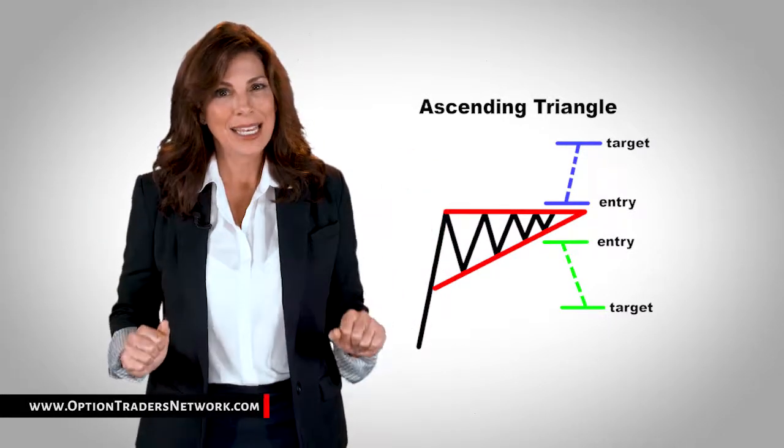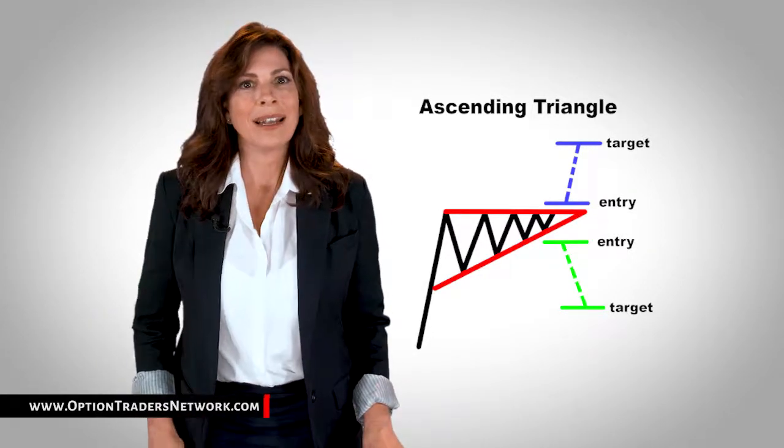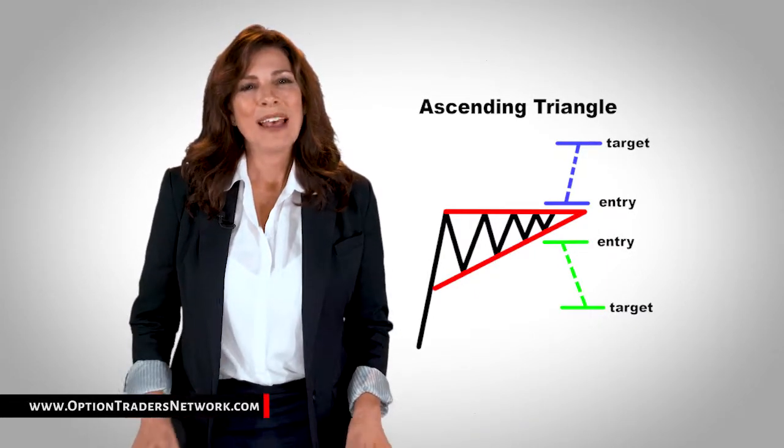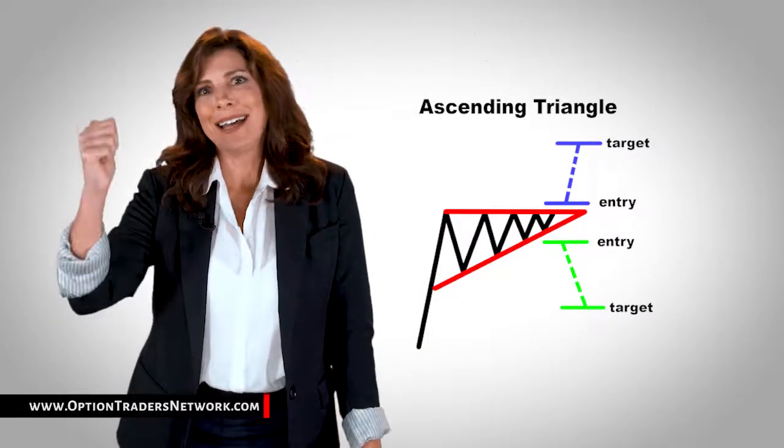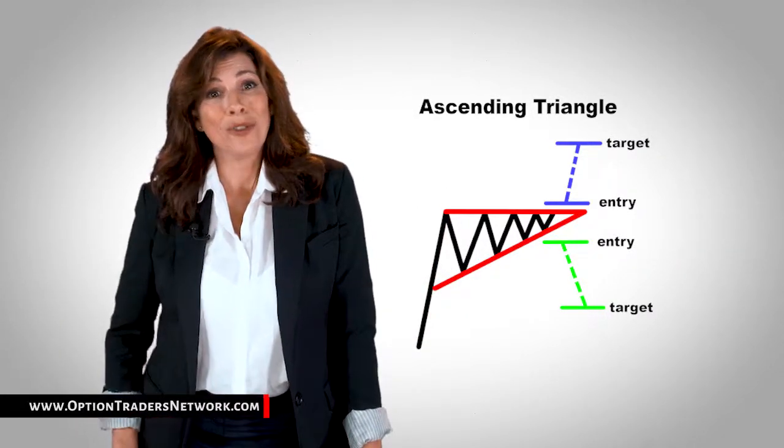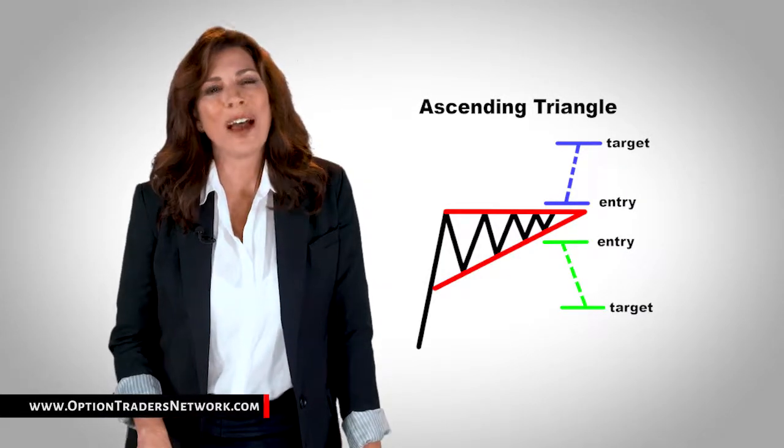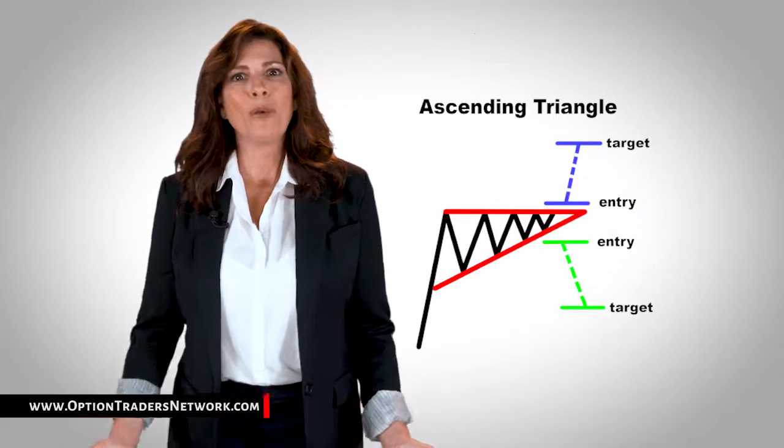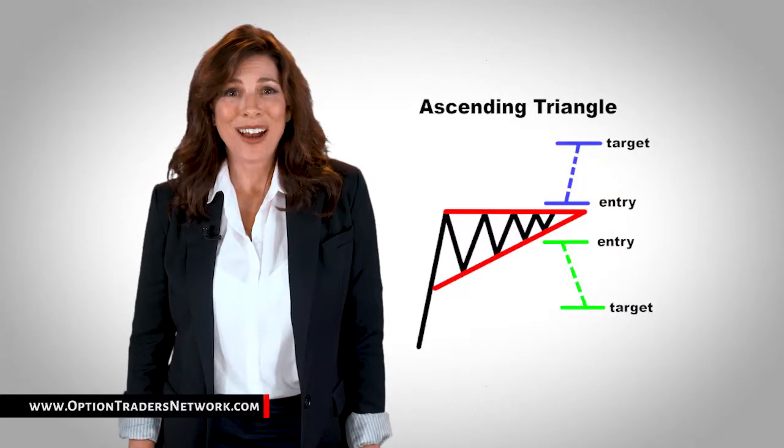In this case, we would set an entry order above the resistance line and below the slope of the higher lows. In this scenario, the buyers lost the battle and the price proceeded to dive. You can see that the drop was approximately the same distance as the height of the triangle formation. If we set our short order below the bottom of the triangle, we could have caught some pips off that dive.